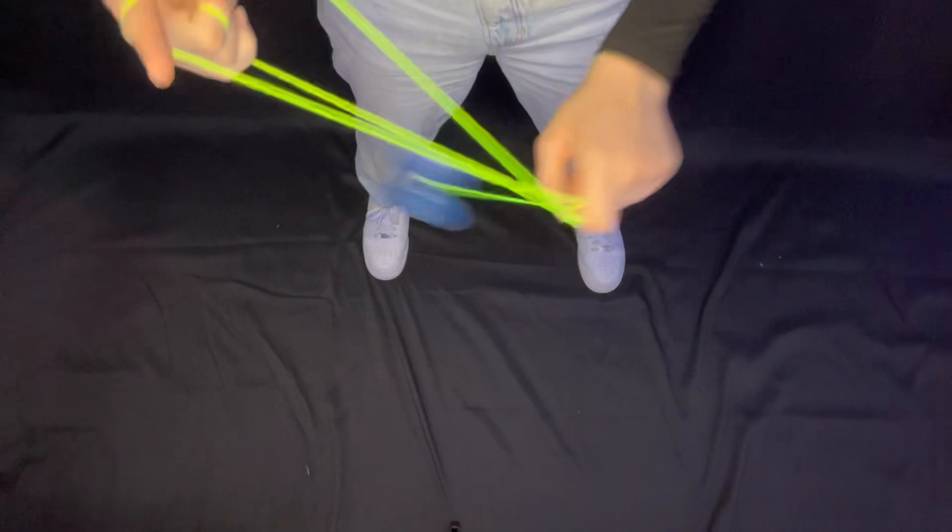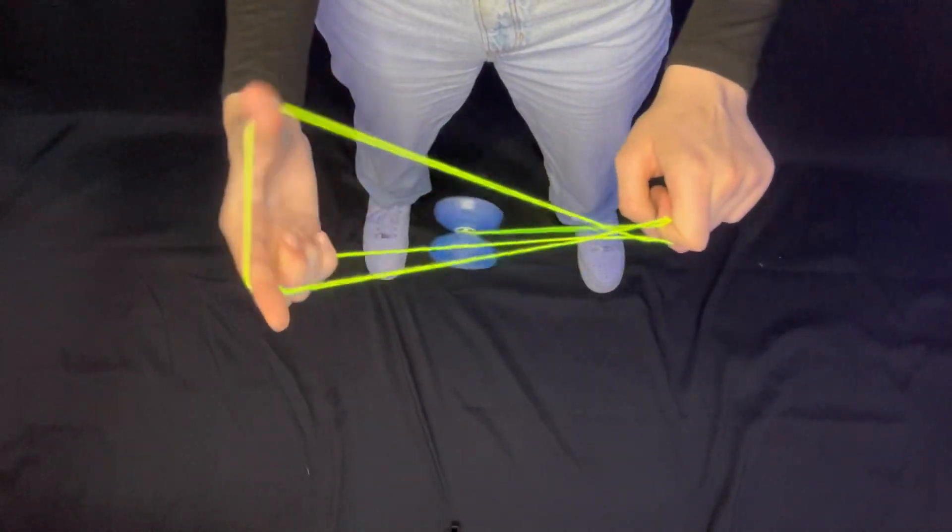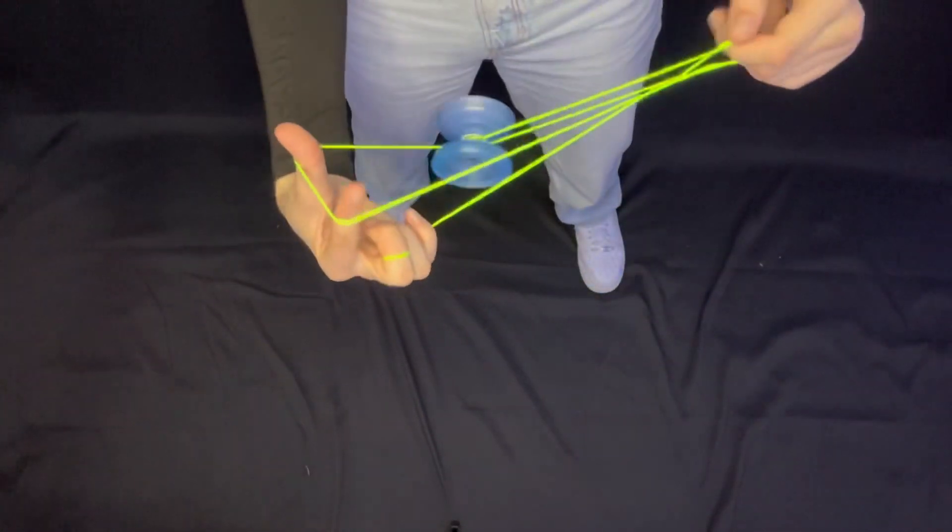So again, once you're here, you want to curl your finger in, roll off, open these strings, and land on from the back like this.